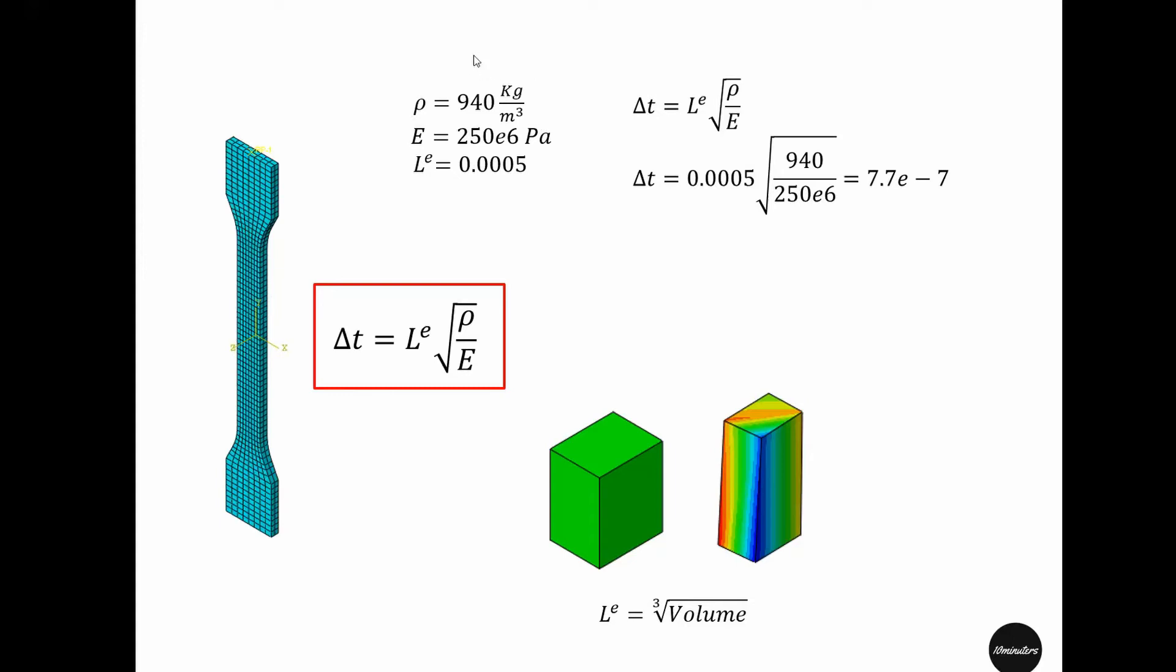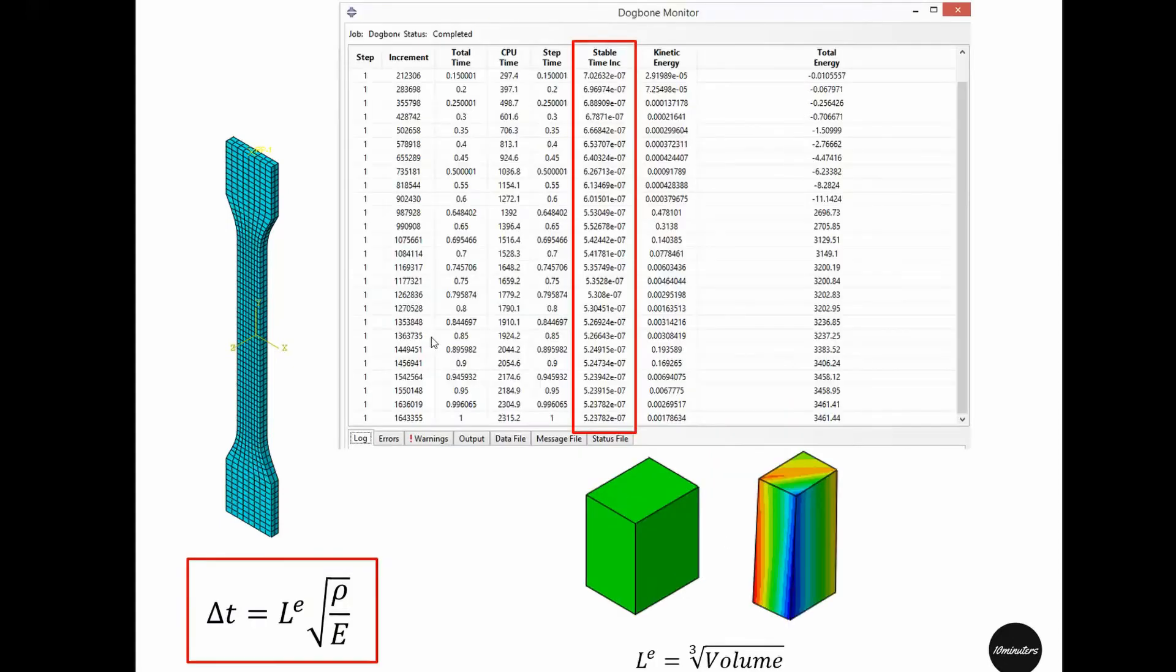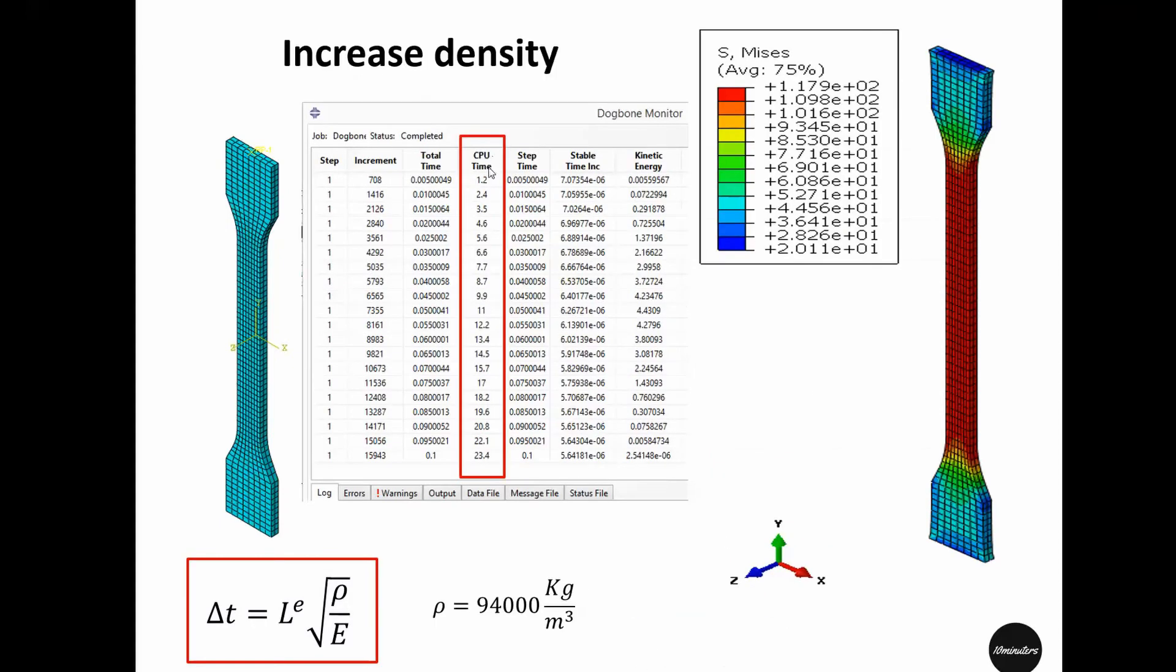So let's try out and put the density to be 94,000. If you put that density in our material definition and then run the same simulation, we will see that the CPU time or the total simulation run time has become only 23 seconds due to the increase in the density.